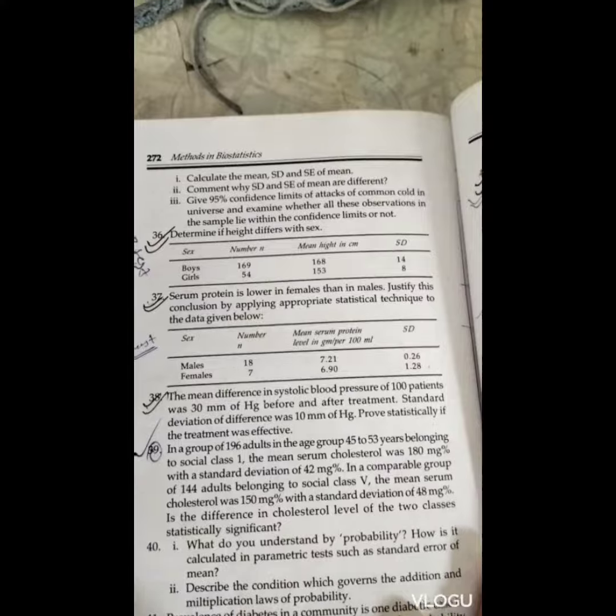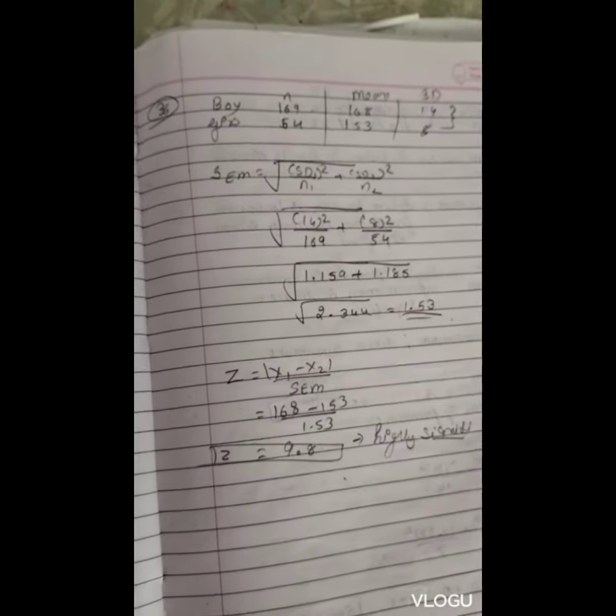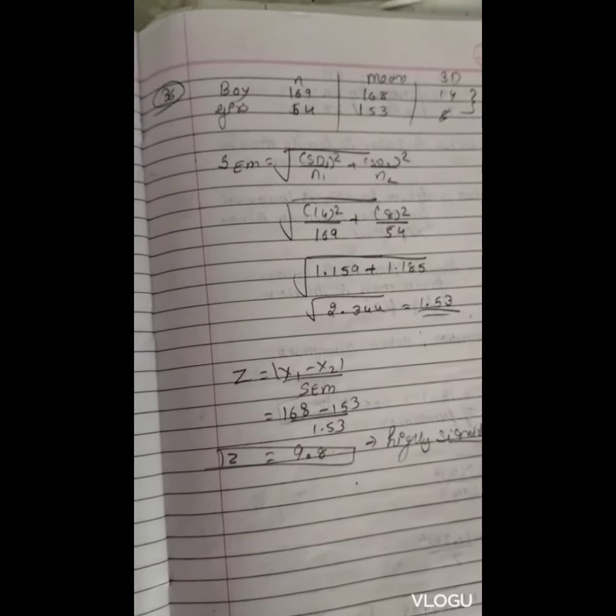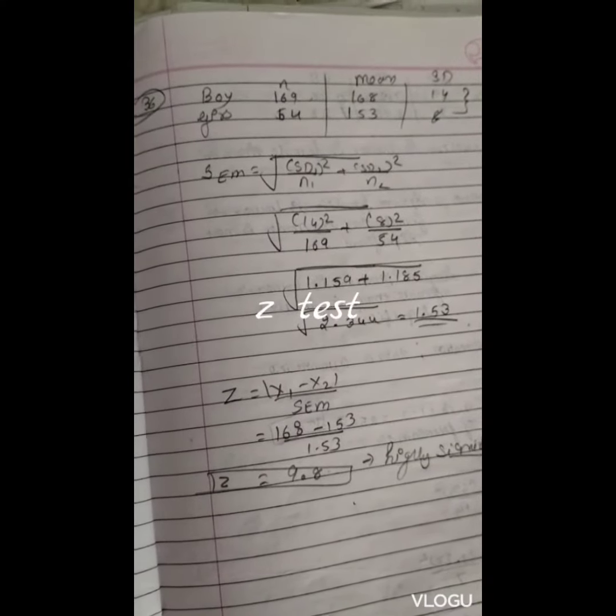When we use these in the formula we get SEM which is very simple. We have to find that value which is significant or not. Number of observation is more than 30, so we are going to use z-test, not t-test.